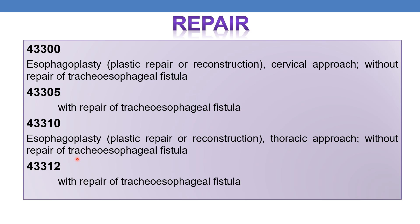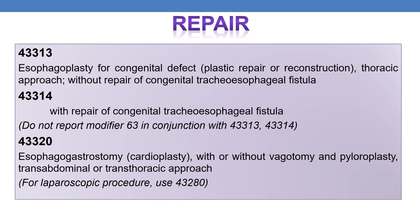CPT 43310 is esophagoplasty, plastic repair or reconstruction, thoracic approach, without repair of tracheoesophageal fistula. If esophagoplasty, thoracic approach, is performed with repair of tracheoesophageal fistula, the CPT is 43312. CPT 43313 is esophagoplasty for congenital defect, plastic repair or reconstruction, thoracic approach, without repair of congenital tracheoesophageal fistula. If esophagoplasty for congenital defect is performed with repair of congenital tracheoesophageal fistula, the CPT is 43314.